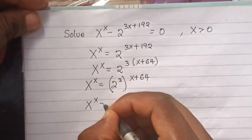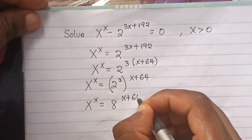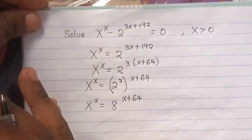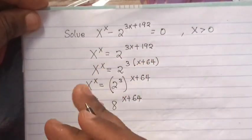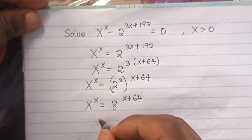This one is same as 8. x power x is equals to 8 to the x plus 64.